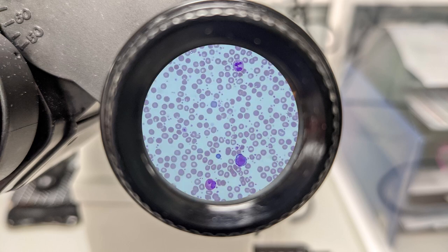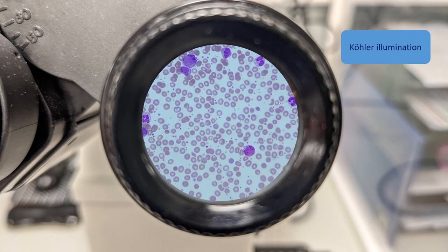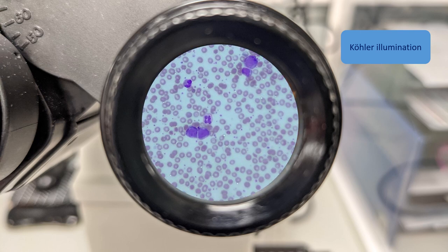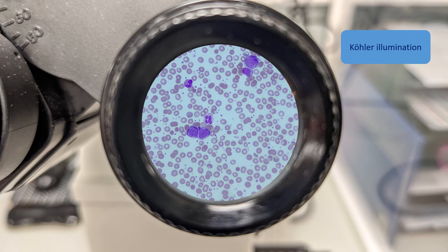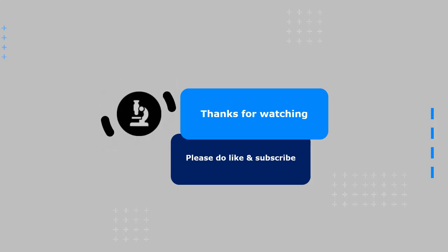This process is known as Köhler illumination, the last step of which would be to adjust the aperture for correct contrast. I have left a link in the description below for more information and in-depth steps of the process.